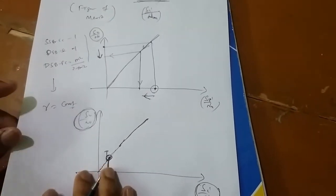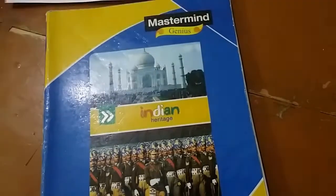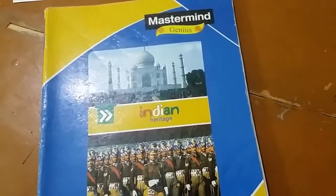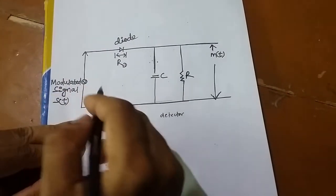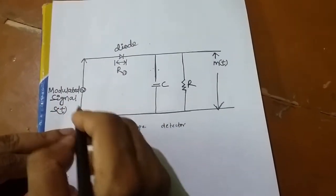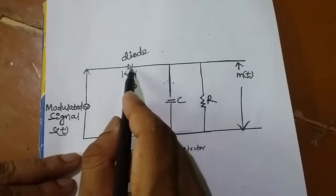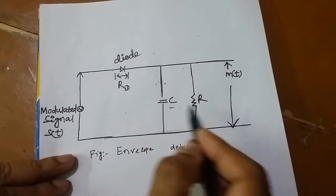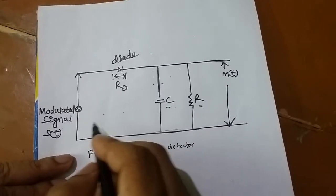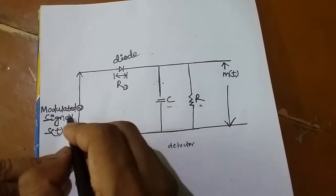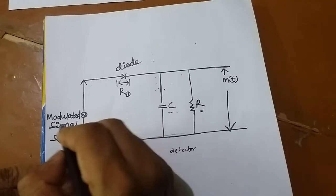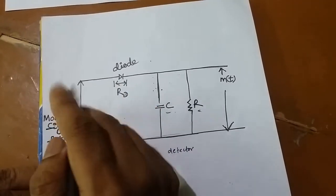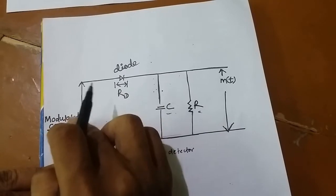Now we will discuss the envelope detector. The envelope detector consists of a diode, a capacitor, and a resistor. When a modulated signal is applied, during the positive half cycle when the voltage is forward biasing the diode, the diode is forward biased.